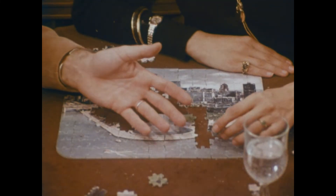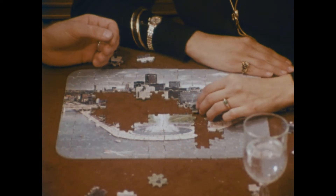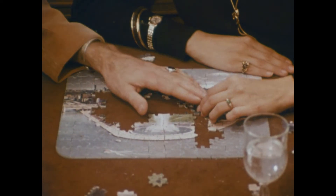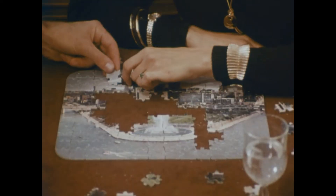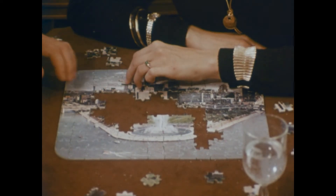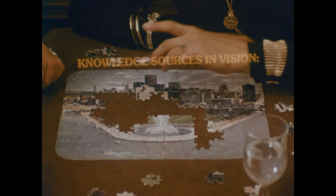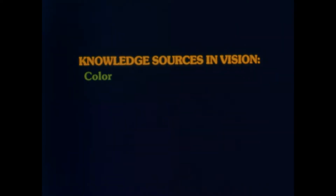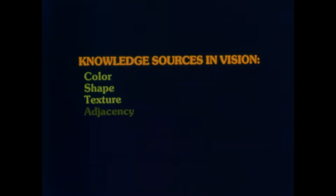We expect buildings to be adjacent to one another, and the sky to be positioned at the top of an image. So we see that some of our visual knowledge is derived from the properties which we associate with an object — like its color, shape, texture, and its relationship to objects around it.